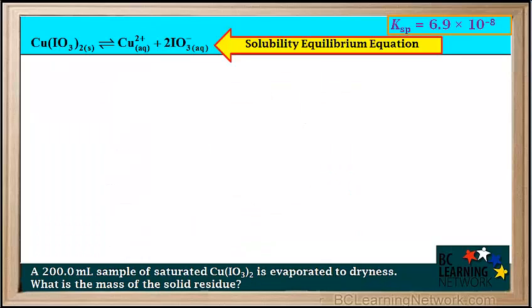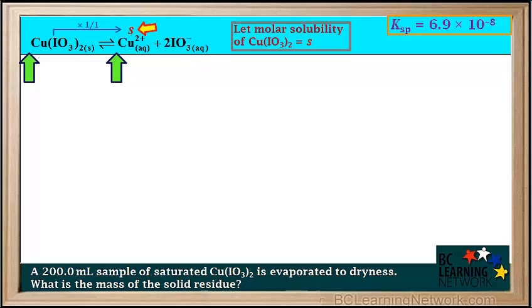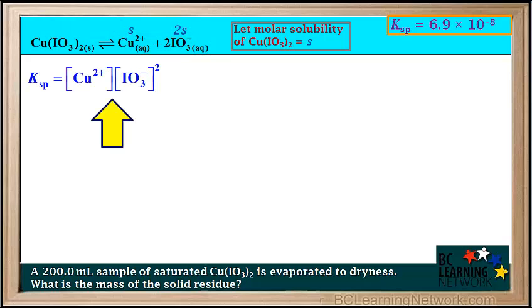We start by writing the solubility equilibrium equation for copper-2-iodate. We represent the molar solubility by the letter S. The mole ratio of Cu²⁺ to the compound Cu(IO₃)₂ is 1 to 1, so the concentration of Cu²⁺ in a saturated solution is equal to S. The mole ratio of IO₃⁻ to the compound is 2 to 1, so the concentration of IO₃⁻ is equal to 2S. The Ksp expression is the concentration of Cu²⁺ times the concentration of IO₃⁻ squared.